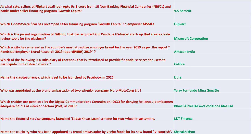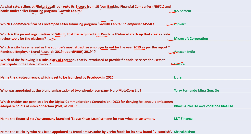9.5% would be the rate charged to Flipkart sellers to avail loans up to 3 crore from 10 NBFCs under their Growth Capital financing program. Microsoft Corporation is the parent organization of GitHub, which acquired Pull Panda, a US startup that creates code review tools. Amazon India is the country's most attractive employer brand for 2019 as per the Randstad Employer Brands Research report. Calibra was the subsidiary of Facebook introduced to provide financial services for users to participate in the Libra network.